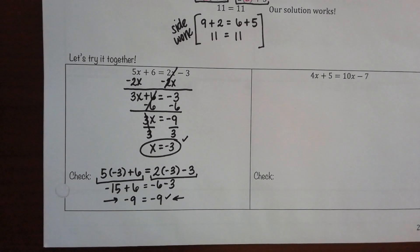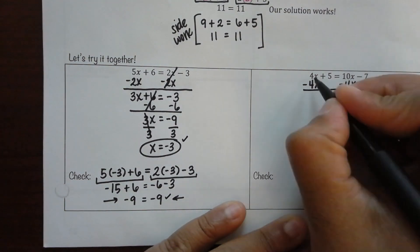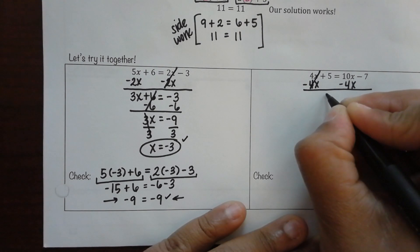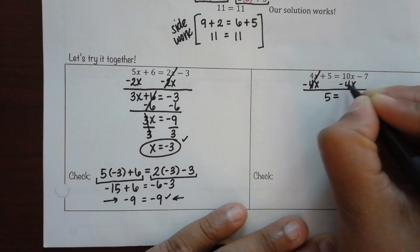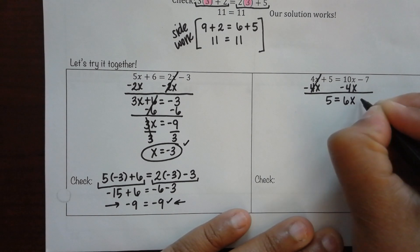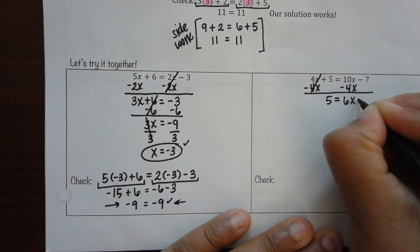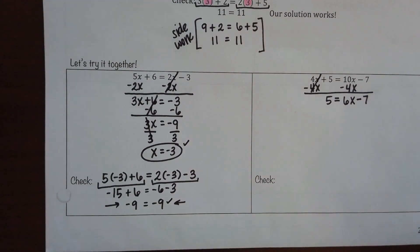Looking at this one. We have 4x plus 5 equals 10x minus 7. What do I need to look at first? The variable terms. Which are what? So, what's the smallest one? So, how do I move that 4x? Subtract it because that's the inverse of it being positive. Going from left to right, what happens to those 4s? 5. Behind that? What's being typed in? 10 minus 4. We know the x is going to come down. But what's 10 minus 4? 6x.